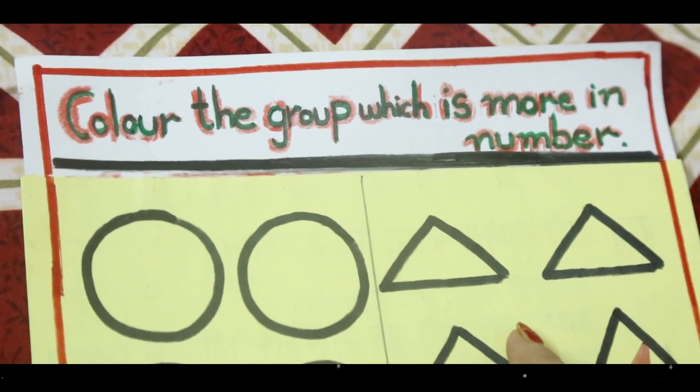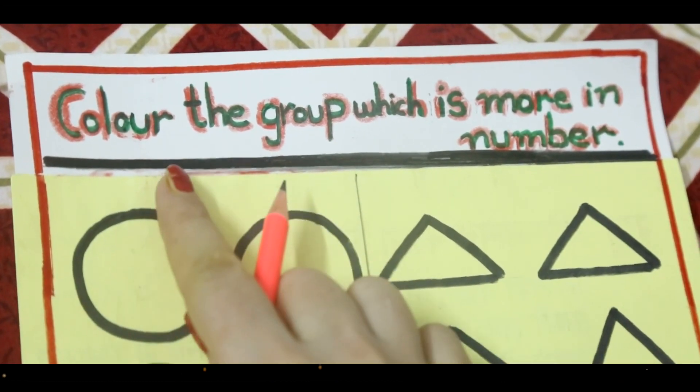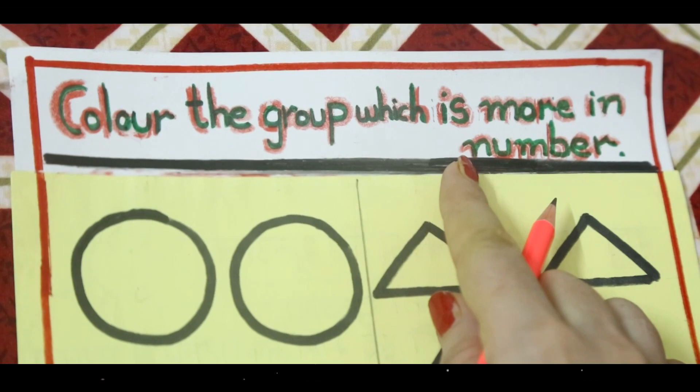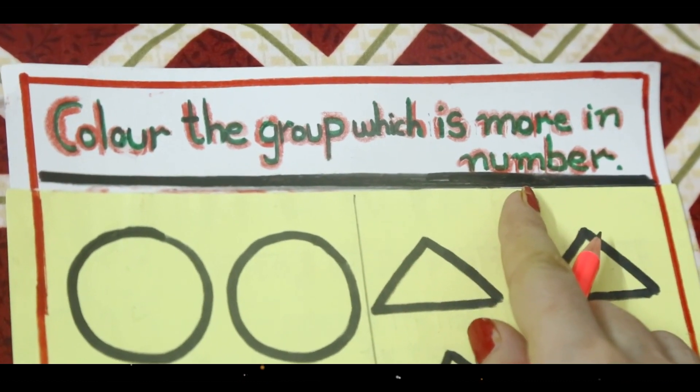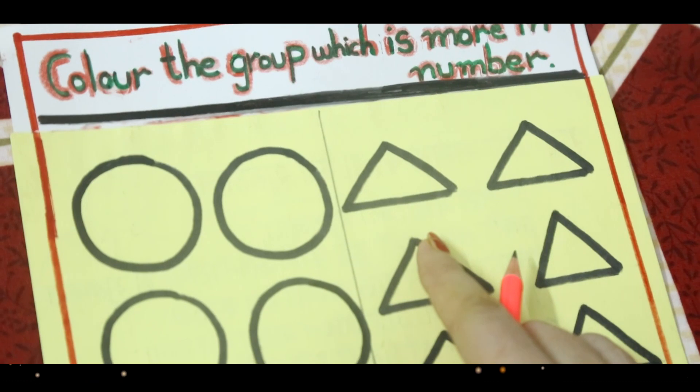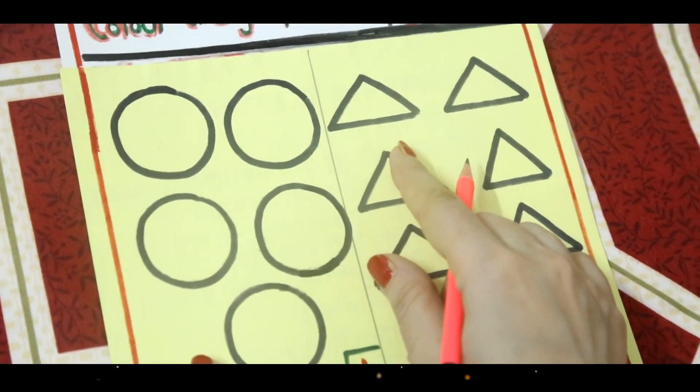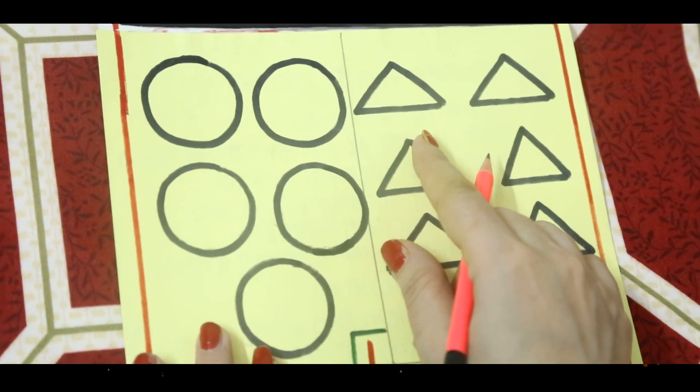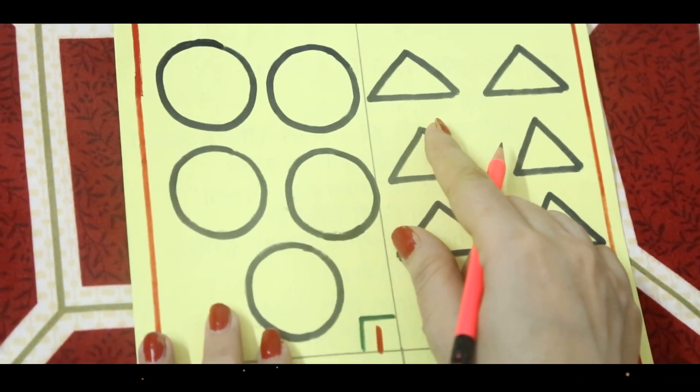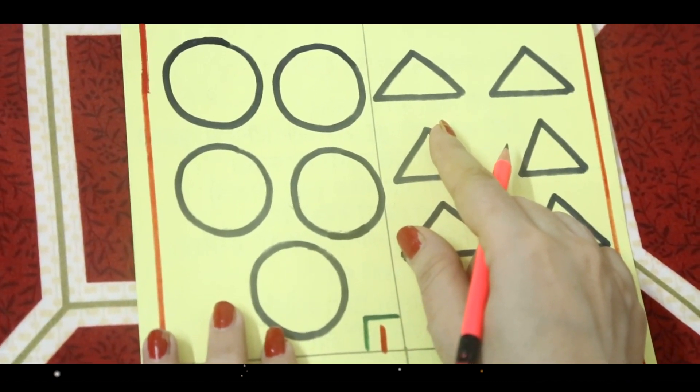What you have to do? You have to color the group which is more in number. So, we will count the objects. The group which will consist of more objects, we will make that group colorful. So, let's start.